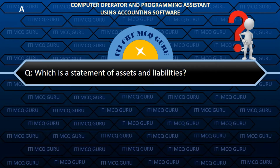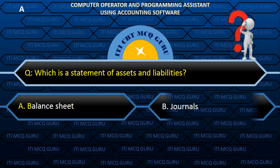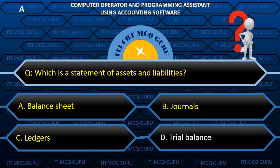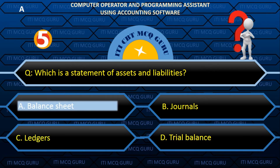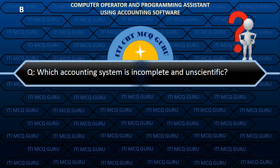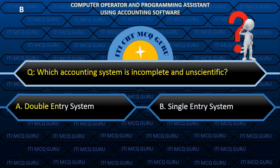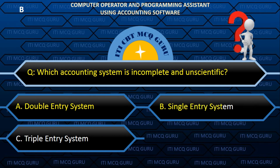Which is a statement of assets and liabilities? A. Balance sheet. B. Single entry system.